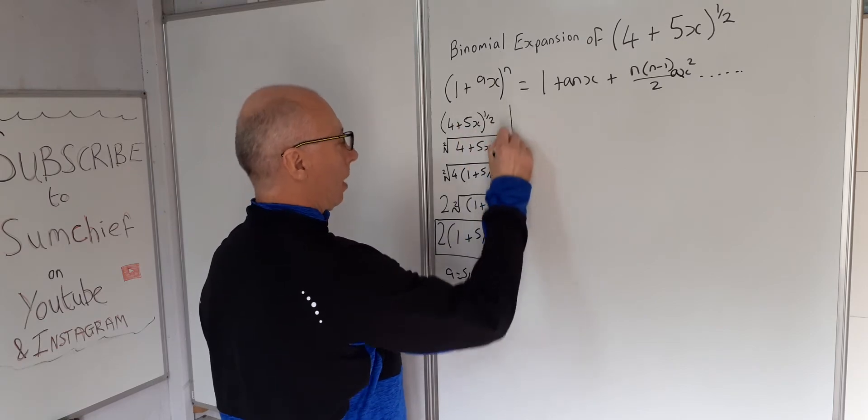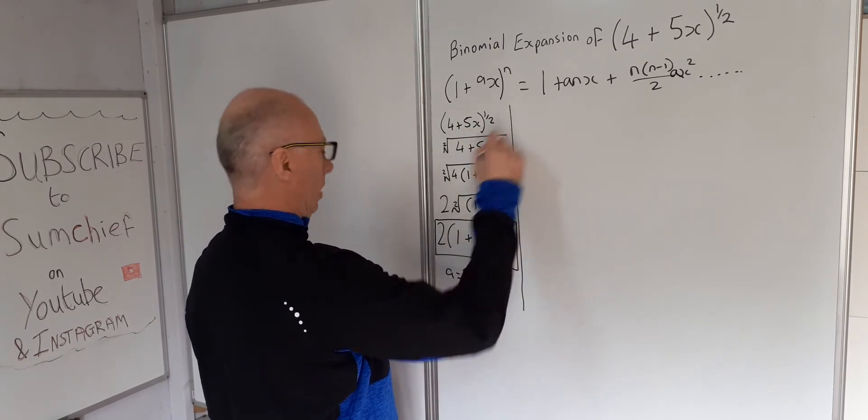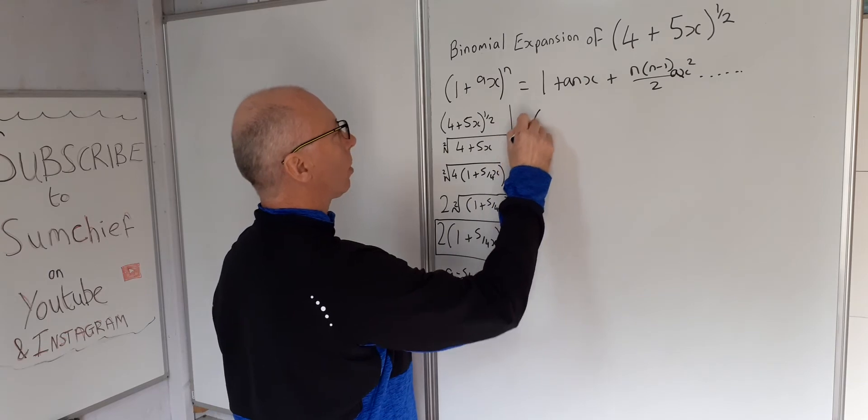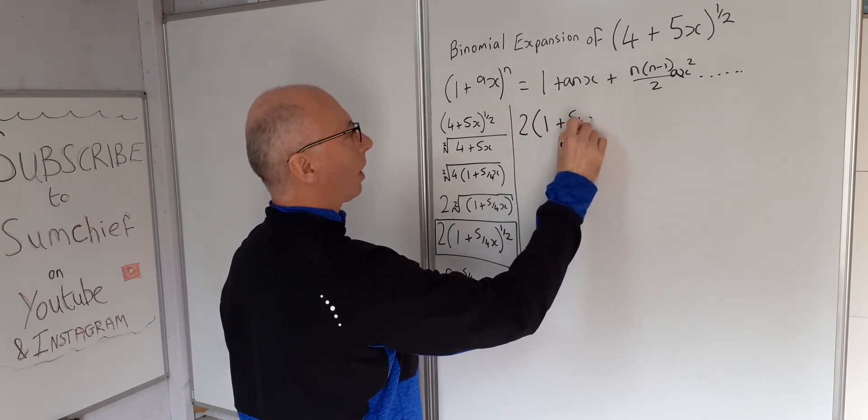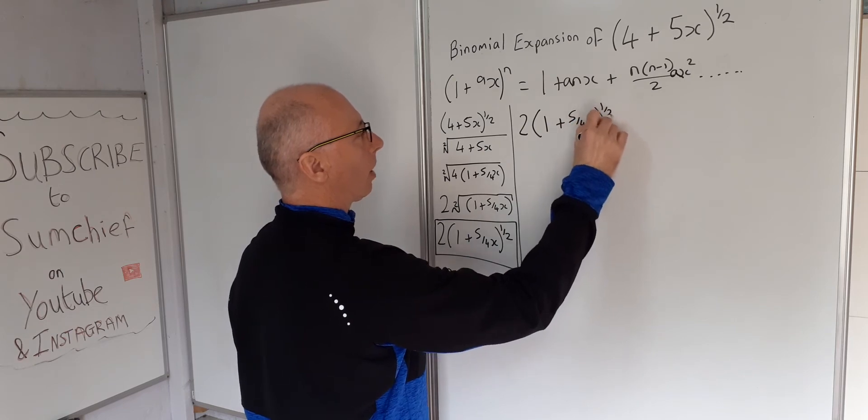So rewriting this, just boxing this off, we get, because we've got the 2 here, we have to put 2 here. So 2 times 1 plus 5 over 4x to the power of a half equals.